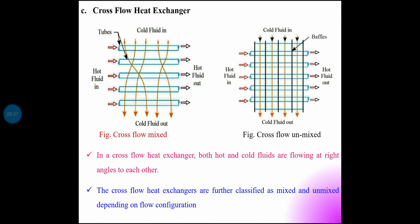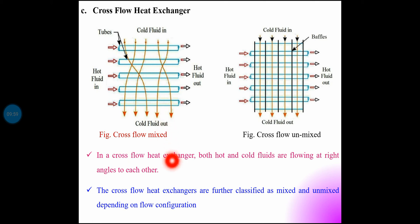Cross flow heat exchanger: in this type, both cold and hot fluids flow at right angles to each other. The hot fluid moves in one direction while the cold fluid moves perpendicular to it. Cross flow heat exchangers are further classified as mixed and unmixed depending upon the flow configuration.